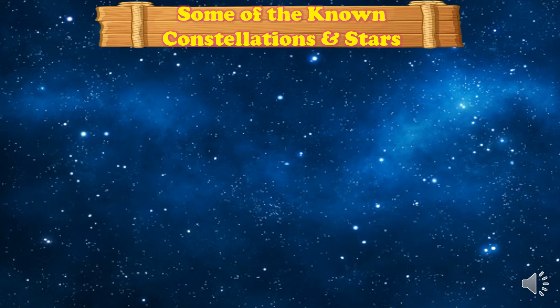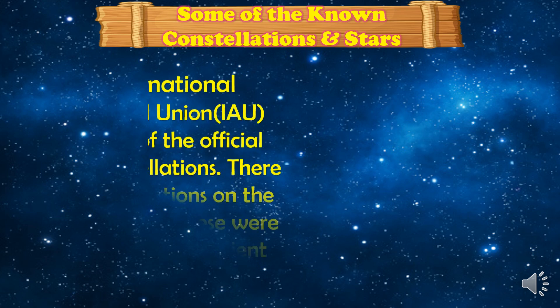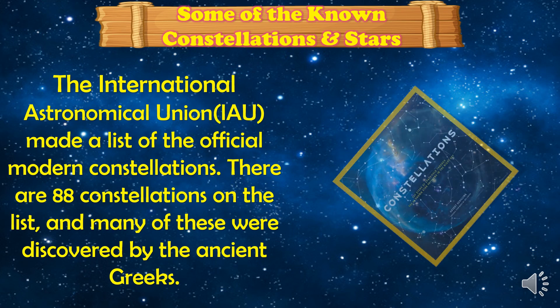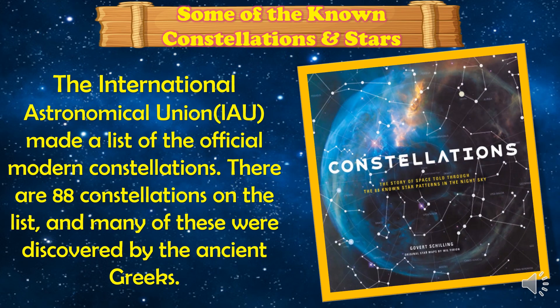Some of the known constellations and stars: the International Astronomical Union, or the IAU, made a list of the official modern constellations. There are 88 constellations on the list, and many of these were discovered by the ancient Greeks.